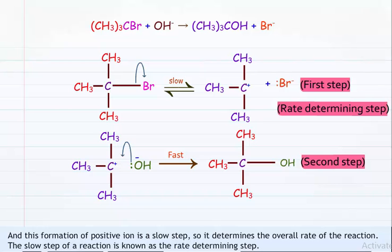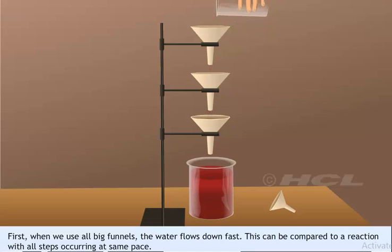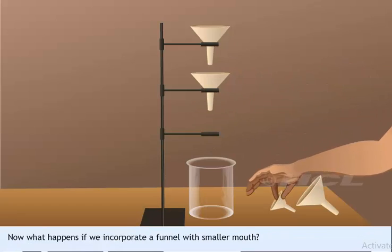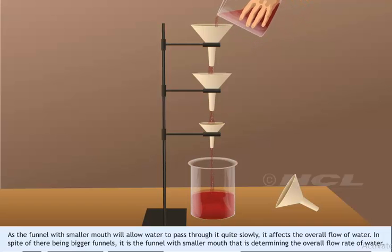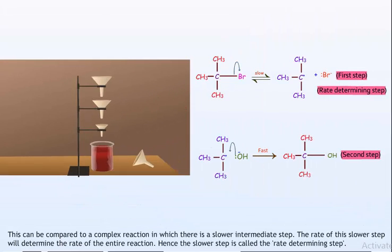We can understand this through a simple analogy. Using big funnels stacked one above the other, water flows down fast through all the funnels and into the beaker — comparable to a reaction with all steps occurring at the same pace. If one funnel has a smaller mouth, it slows the overall flow of water, despite the bigger funnels present. It is the funnel with the smaller mouth that determines the overall flow rate — comparable to a complex reaction in which a slower intermediate step determines the rate of the entire reaction. Hence, the slower step is called the rate determining step.